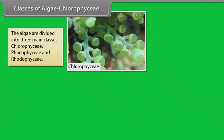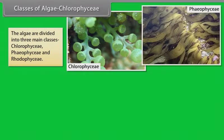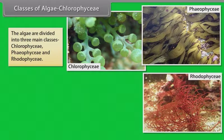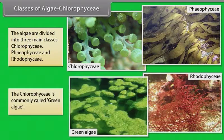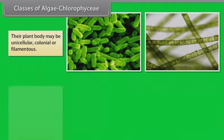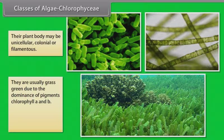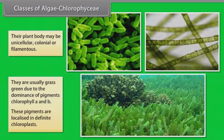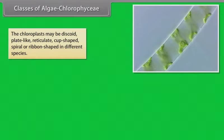Chlorophyceae. The algae are divided into three main classes: Chlorophyceae, Phaeophyceae and Rhodophyceae. The Chlorophyceae is commonly called green algae. Their plant body may be unicellular, colonial or filamentous. They are usually grass green due to the dominance of pigments chlorophyll A and B. These pigments are localized in definite chloroplasts. The chloroplasts may be discoid, plate-like, reticulate, cup-shaped, spiral or ribbon-shaped in different species.